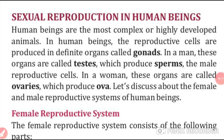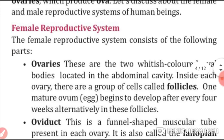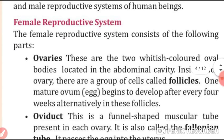Now we will study sexual reproduction in human beings. Human beings are the most complex and highly developed animals. The reproductive cells are produced in definite organs called gonads. In a man, these organs are called testes, which produce sperms. In women, these organs are called ovaries, which produce ova.